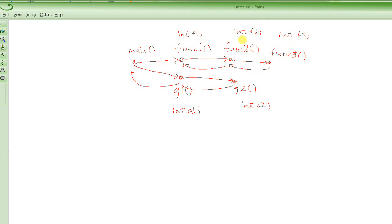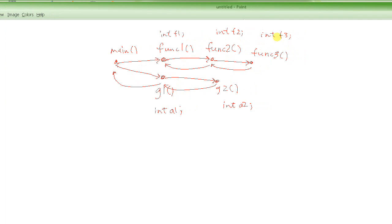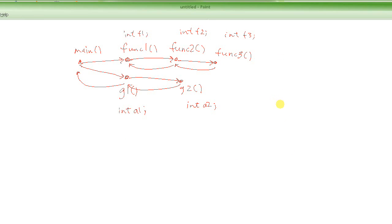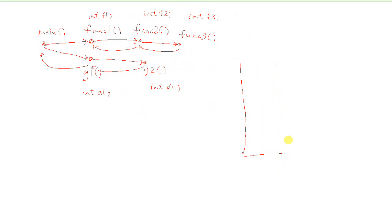Let's look at how these variables are created in memory. They are actually created on the stack. This is the part of memory which is allocated for creating local variables. When func1 is called, a piece of this stack — right after where main ends — is allocated for func1. Inside it, we will have the variable f1, plus space for any parameters this function might have.